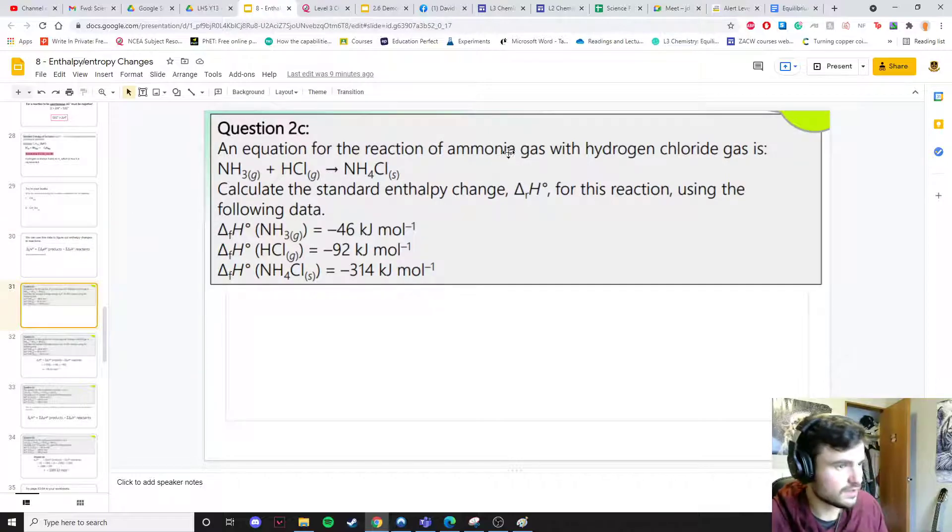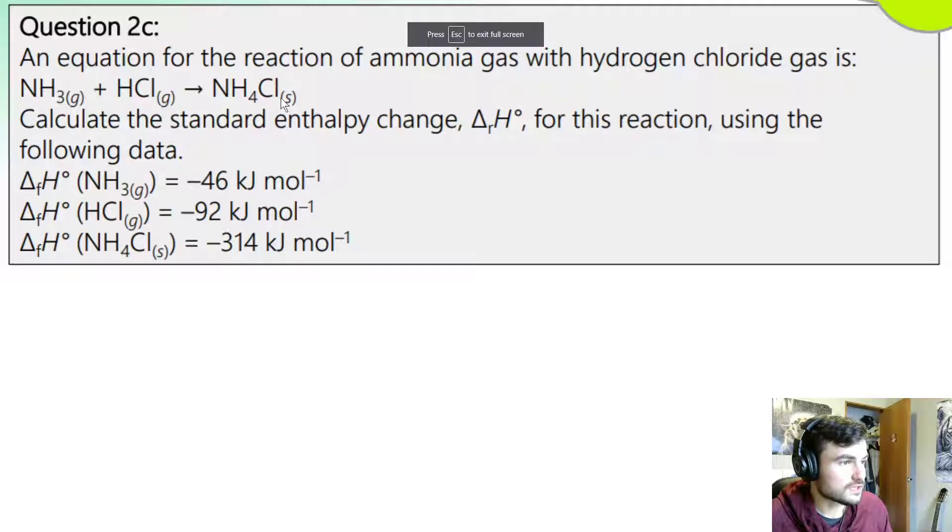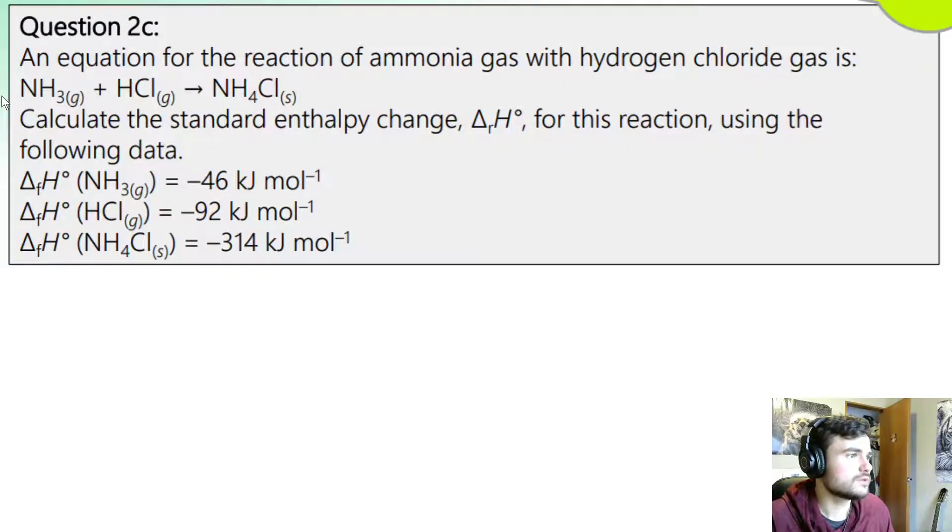Here we go. We have this equation which is ammonia plus some hydrochloric acid making ammonium chloride, and we can work out the enthalpy change for the reaction. This delta Rh means the enthalpy change for the reaction using this formation data. We do products minus reactants. What's our product? Our product is ammonium chloride which is here, negative 314.